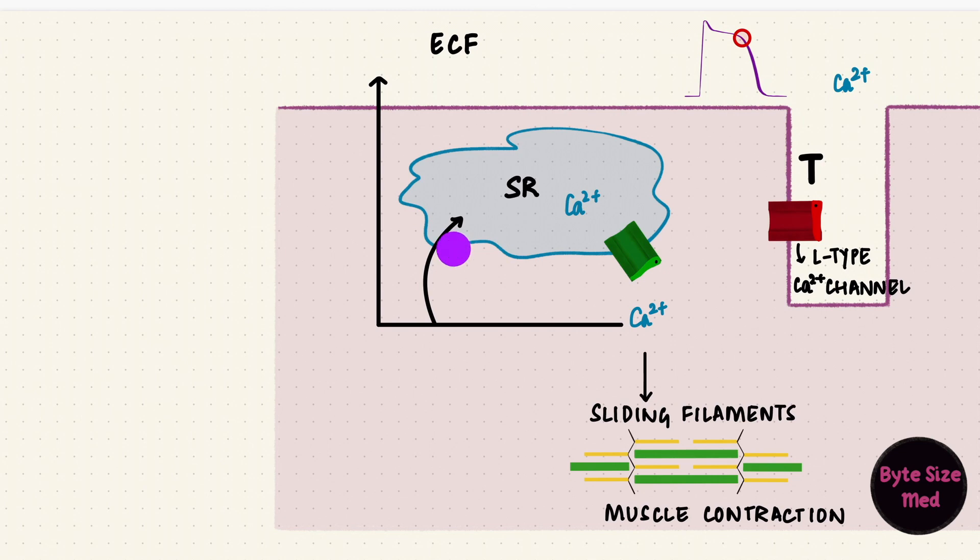The sarcoplasmic reticulum has a calcium ATPase pump that uses ATP and moves calcium against its gradient back inside the sarcoplasmic reticulum. This is the sarcoplasmic endoplasmic reticulum calcium ATPase type 2. The sarcoplasmic membrane, which is basically the plasma membrane